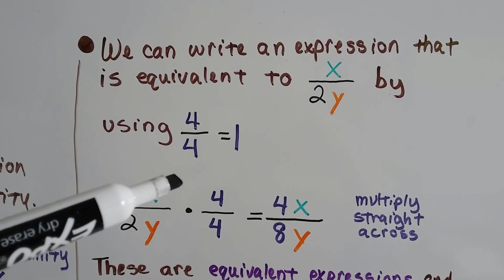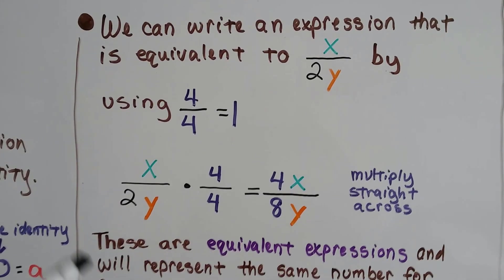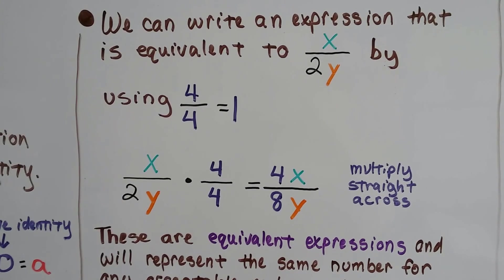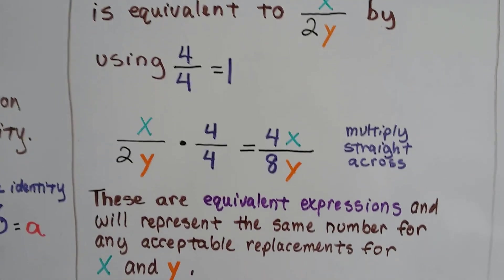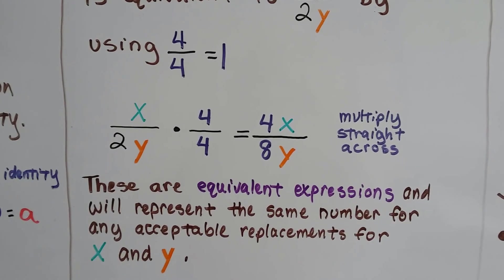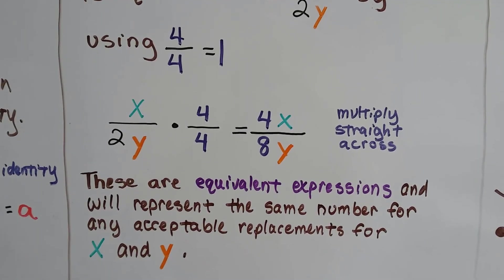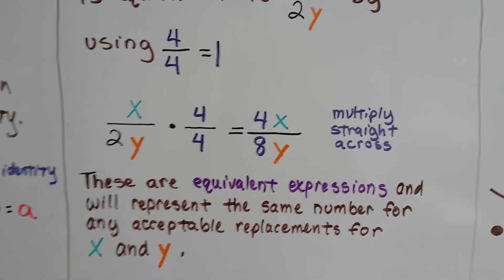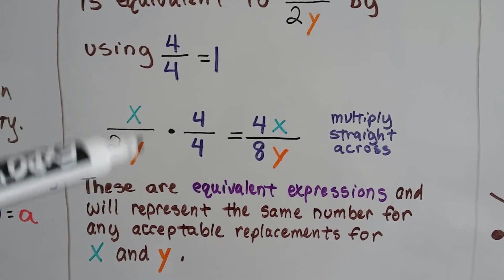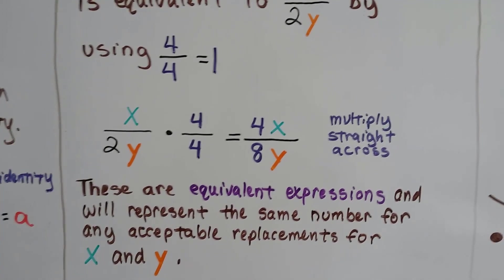As long as the numerator and denominator are the same, it's going to equal 1. When we multiply straight across, we get 4x over 8y, and these are equivalent expressions. They're going to represent the same number for any acceptable replacement for x and y. It doesn't matter what x and y equal, it's going to be equivalent.